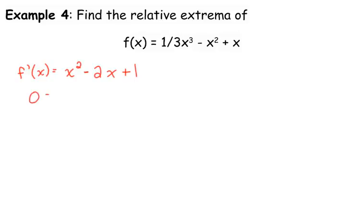Set that equal to zero means we need to factor. Well, guess what? That is a perfect square trinomial. That factors into (x - 1)(x - 1). We have a repeated root.